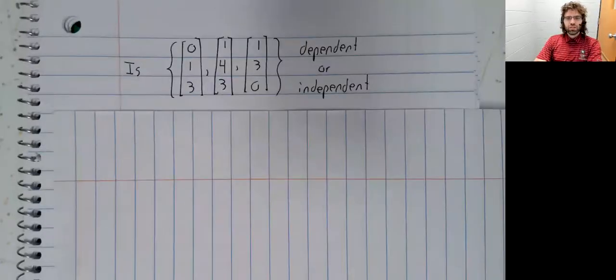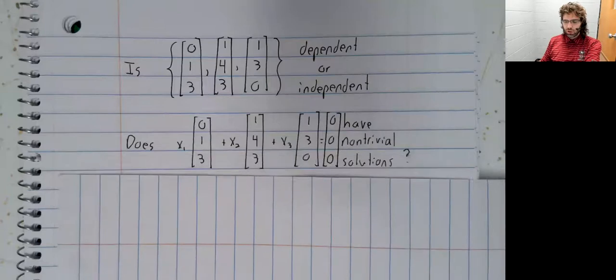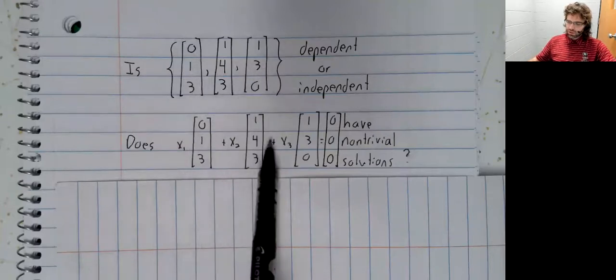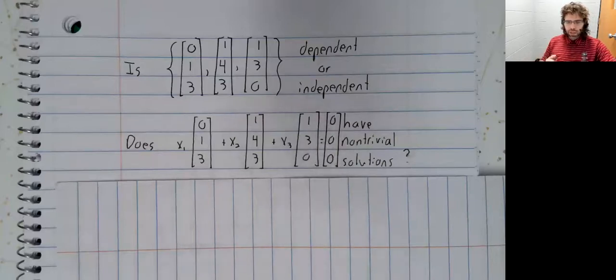Let's drive home the definition of dependence and independence by looking at an example. Is this set of vectors linearly dependent or linearly independent? Answering this question amounts to solving a homogeneous vector equation. So we use these vectors to set up this homogeneous equation equal to zero, and we ask whether this homogeneous equation has non-trivial solutions.